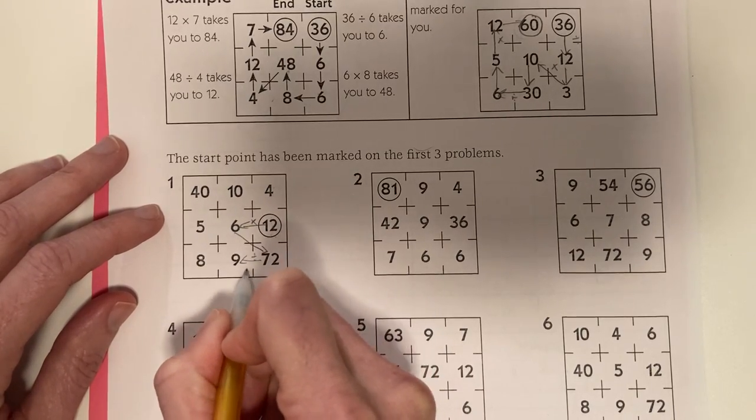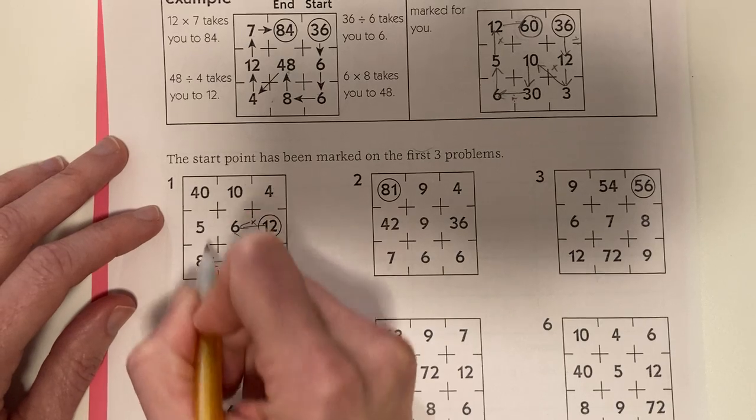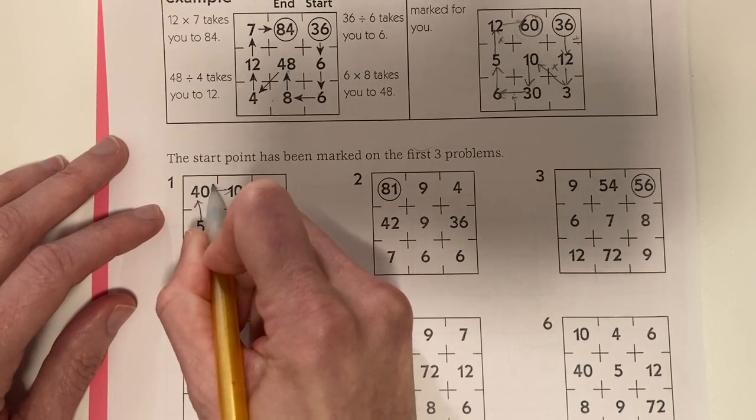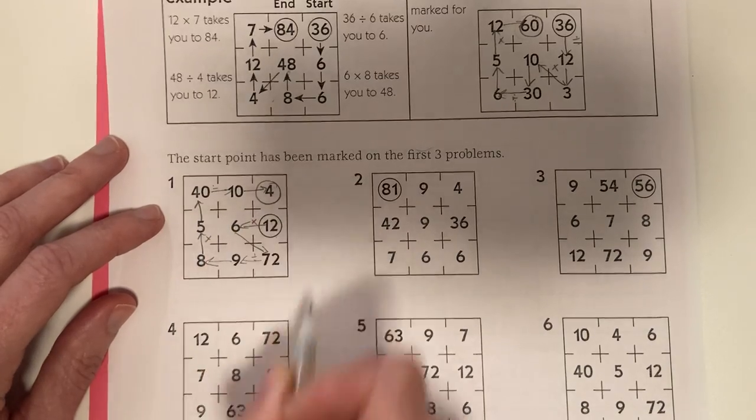72 divided by 9 is 8. 8 times 5 is 40. And 40 divided by 10 is 4. Got them all.